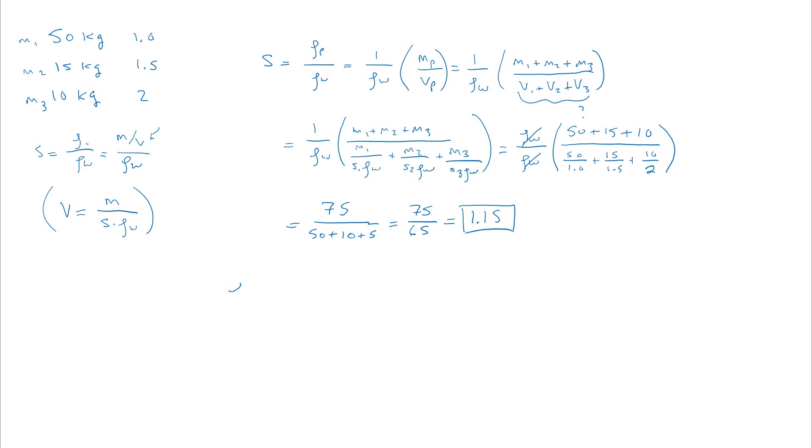The second part of this question asks about the density of the person. But since we have the specific gravity, this is quite easy. The density will be equal to the specific gravity times the density of water. This comes just from the definition of the specific gravity as the density of the object, in this case a person, divided by the density of water. We can always multiply both sides by the density of water to find the density of our object. So doing that, we know that the specific gravity of our object is 1.15. And then the density of water is 1,000 kilograms per cubic meter.